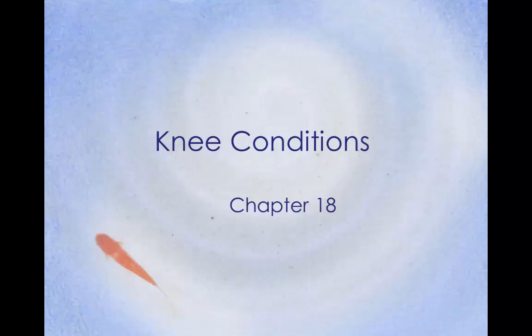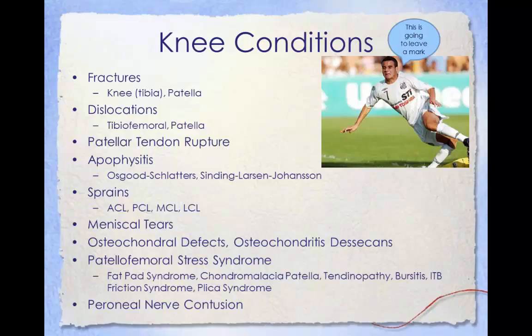Knee Conditions, Chapter 18. The knee conditions to be discussed within this lecture include fractures of the knee, tibia, and patella; dislocations of the tibiofemoral joint and patella; patella tendon rupture; apophysitis including Osgood-Schlatter's and Sinding-Larsen-Johansson disease; sprains of the ACL, PCL, MCL, and LCL; meniscal tears; osteochondral defects and osteochondritis dissecans; patellofemoral stress syndrome including fat pad syndrome, chondromalacia patella, tendinopathy, bursitis, IT band friction syndrome, and plica; as well as peroneal nerve contusion.